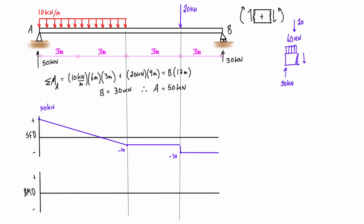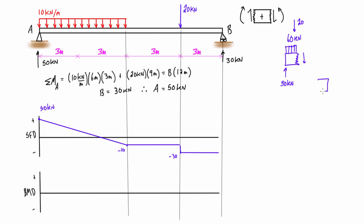Let's verify this by checking from the other side. If we section just to the left of support B, we have 30 kilonewtons pressing up from that reaction. The shear force must then be 30 kilonewtons pressing down in that region. On the left-hand side of a cut, positive is upward, so pressing down is negative — giving negative 30 kilonewtons. That matches exactly what we have at the end of the shear force diagram, so we've done that correctly.